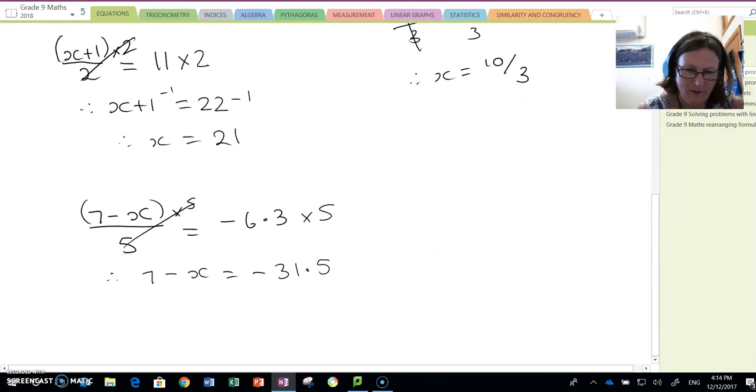Then, I need to undo the 7. So I subtract 7 from both sides. 7 subtract 7 cancels.